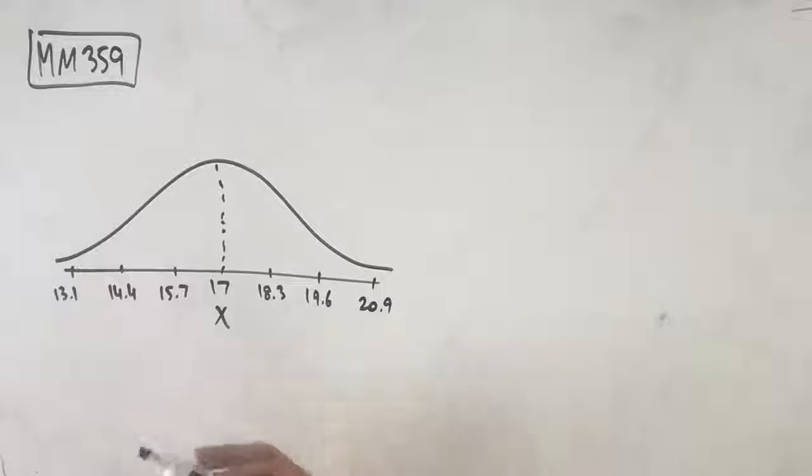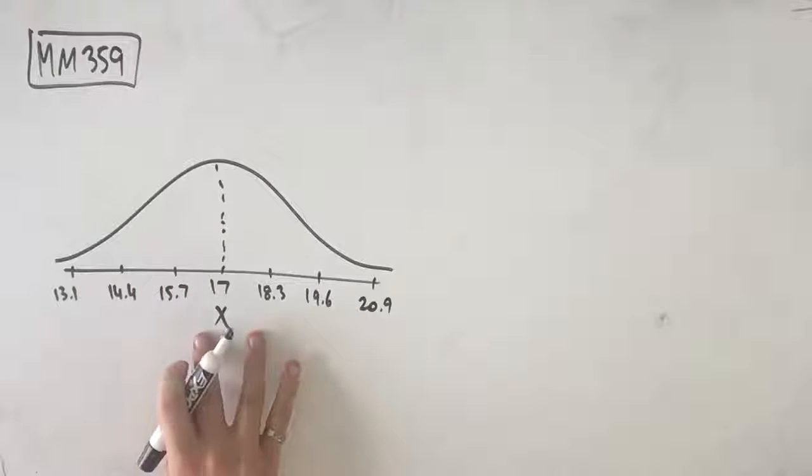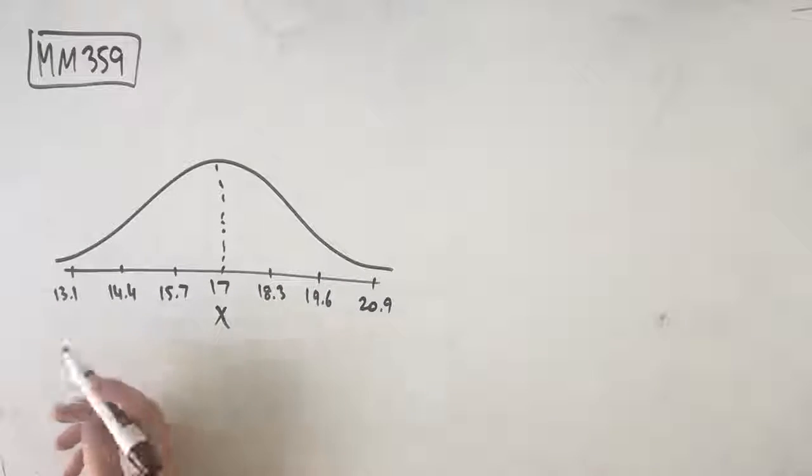Now consider the random variable z which follows the standard normal distribution. The probability that x is greater than 14.4 is equal to... So we know that this is our normal distribution of this particular distribution. We know that our mean at the middle is 17 and we go up and down by 1.3.